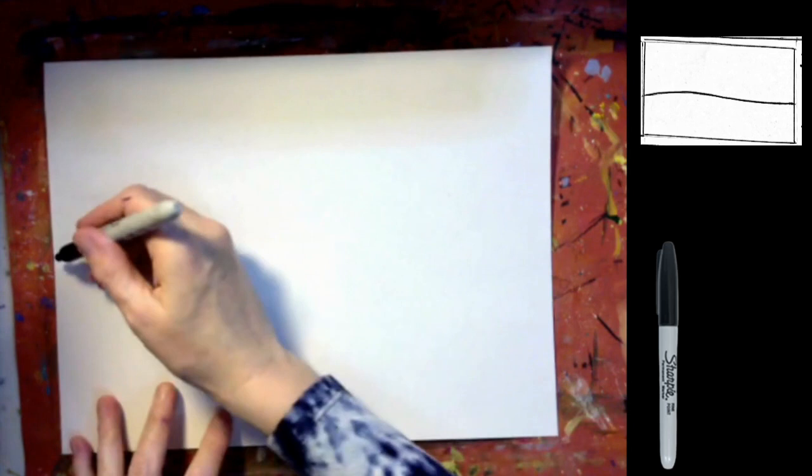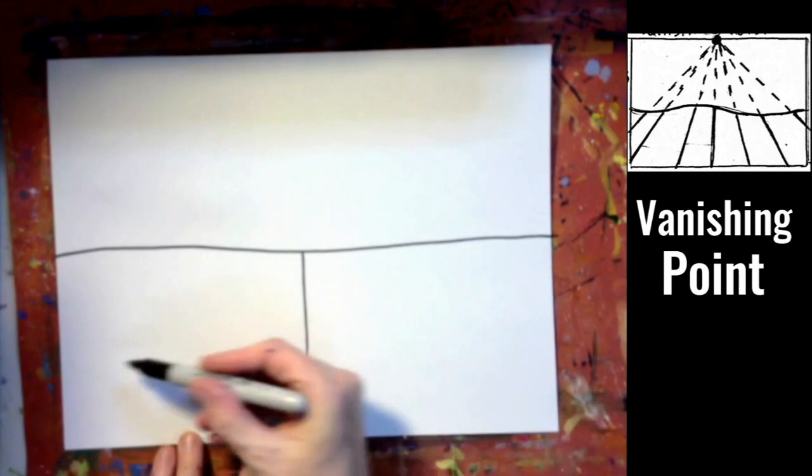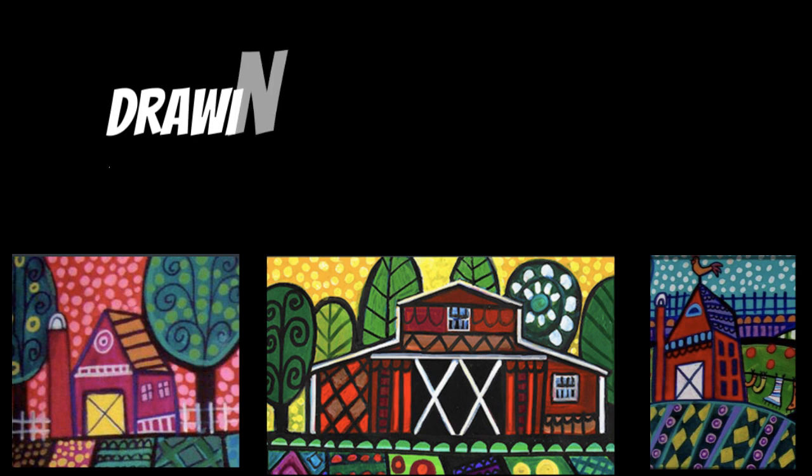Let's get started. Put your paper in the horizontal position. With a black Sharpie, I'm drawing one line across the center of the paper — this is the horizon line. I'm dividing the farm field into sections, starting with a vertical line in the center.